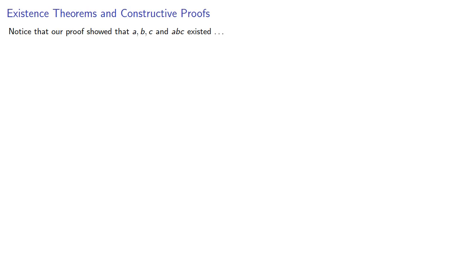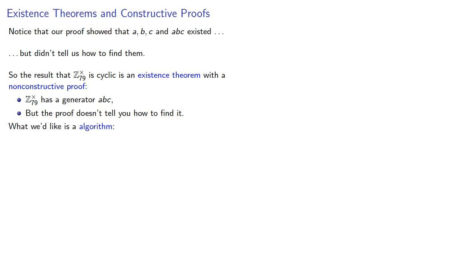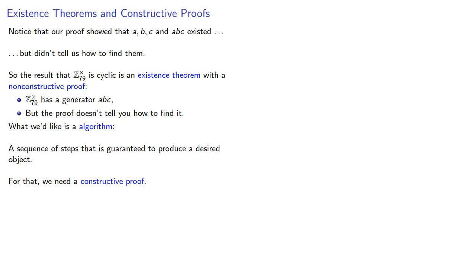At this point, we'll point out something useful. Notice that our proof that this multiplicative group of integers is cyclic showed that a, b, c, and the product abc existed, but it didn't tell us how to find them. We say that the result that this group is cyclic is an existence theorem with a non-constructive proof. We know that it has a generator abc, but the proof doesn't tell you how to find it. What we'd like is an algorithm — a sequence of steps that is guaranteed to produce a desired object. For that, we need a constructive proof. Let's take a look at that next.